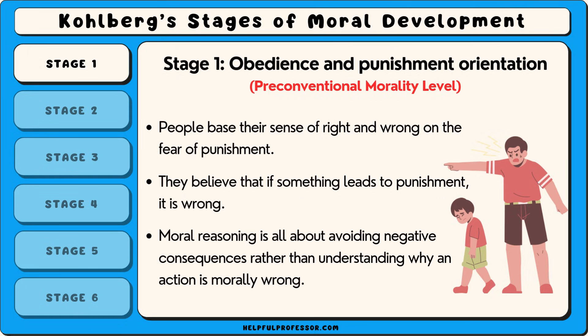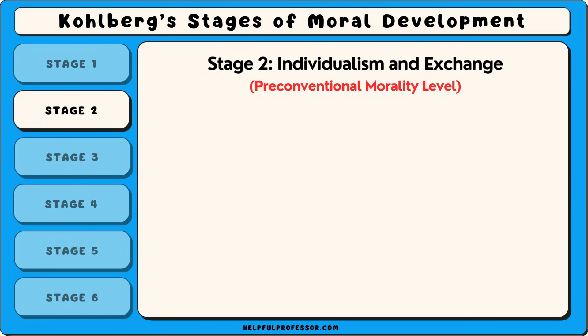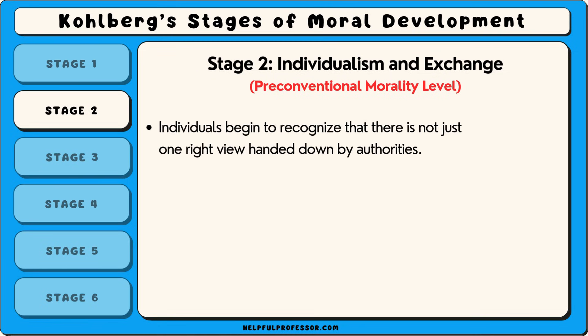Moral reasoning in this stage is all about avoiding negative consequences rather than understanding why an action is morally wrong. The second stage is known as individualism and exchange. At this stage, individuals begin to recognise that there is not just one right view handed down by authorities.